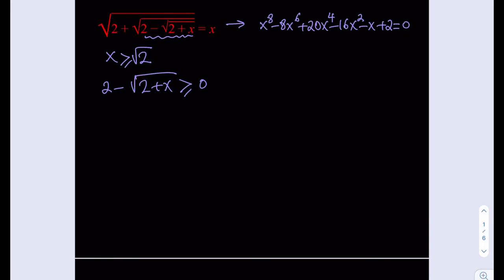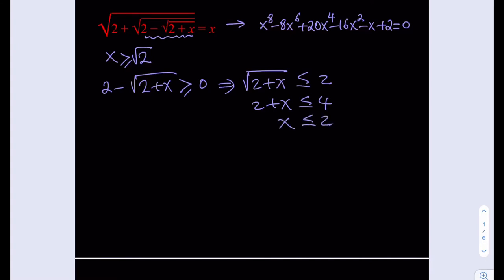Let's see what this gives us. We're going to add that to the other side, so we'll be getting the square root of 2 plus x is less than or equal to 2. If you square both sides, you're going to be getting x is less than or equal to 2. And since we already know that x is greater than or equal to root 2, that means x is going to be between root 2 and 2, inclusive.